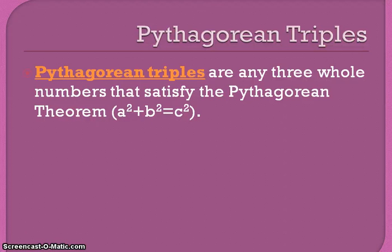Pythagorean Triples are any three whole numbers, so no decimals, that satisfy the Pythagorean Theorem, which is a squared plus b squared equals c squared, where c is your longest side.